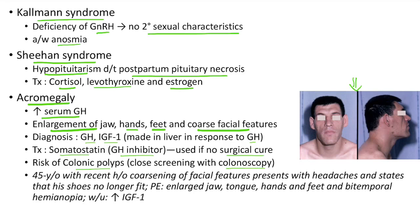Now let us see a clinical case of acromegaly. A 45-year-old with recent history of coarsening of facial features presents with headaches and states that his shoes no longer fit. Physical examination shows enlarged jaw, tongue, hands and feet and bitemporal hemianopia. Workup shows elevated IGF-1. This is a classic case of acromegaly showing all the features which we have discussed.